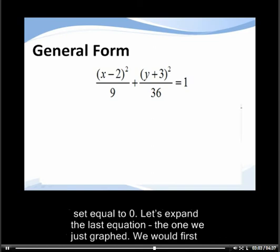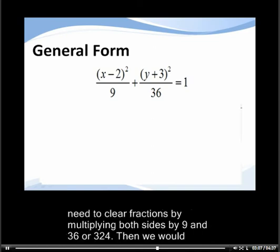Let's expand the last equation, the one we just graphed. We would first need to clear the fractions by multiplying both sides by 9 and 36, or 324.